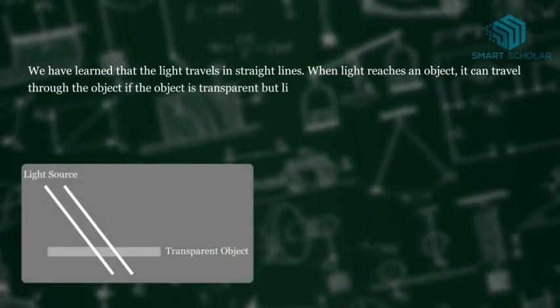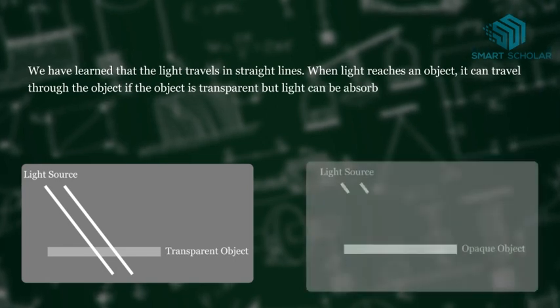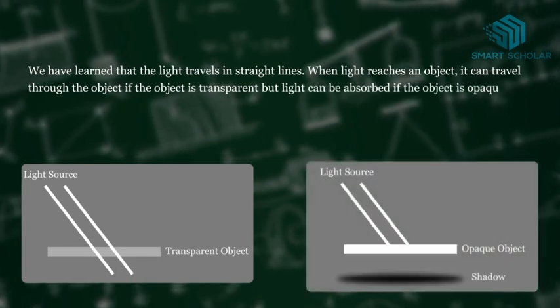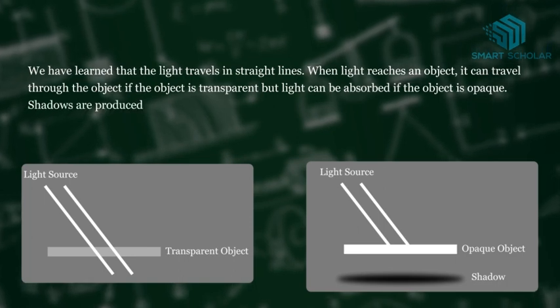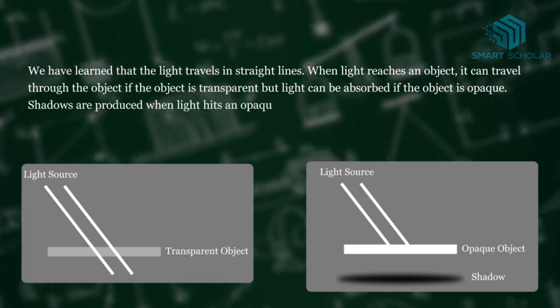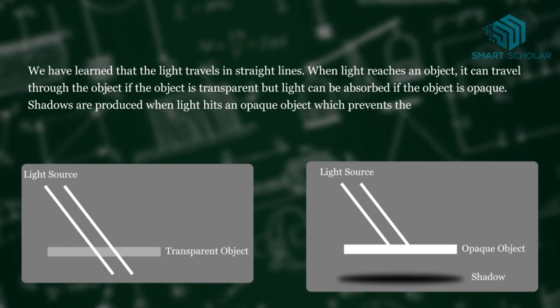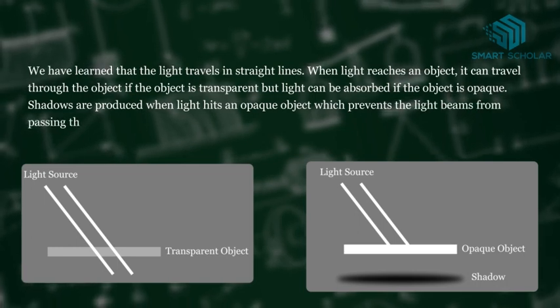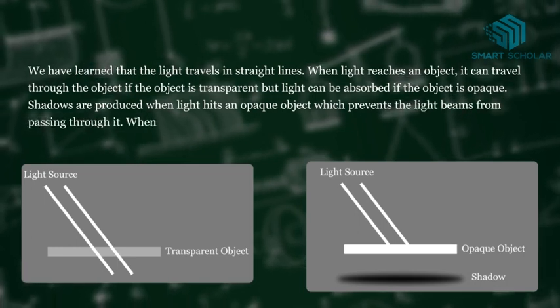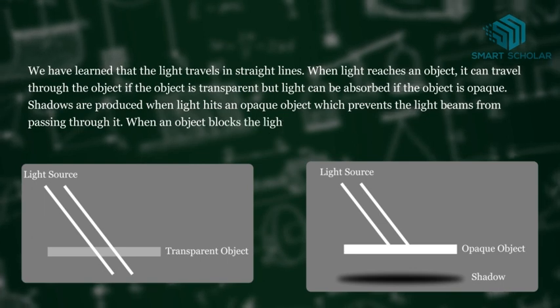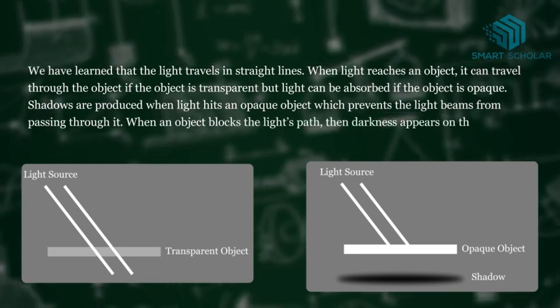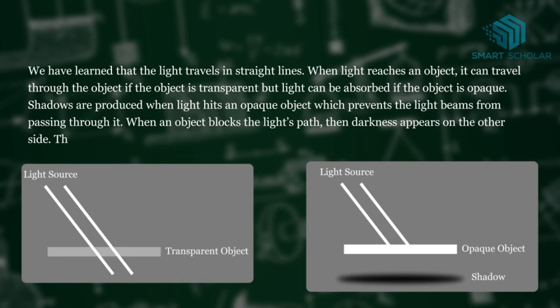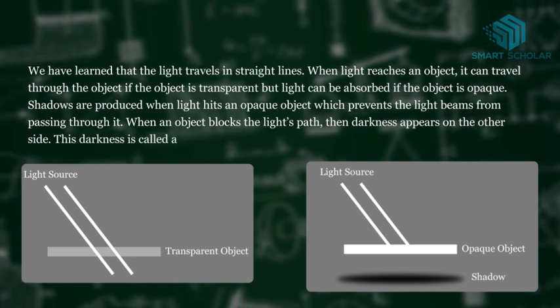Shadows are produced when light hits an opaque object, which prevents the light beams from passing through it. When an object blocks the light's path, then darkness appears on the other side. This darkness is called a shadow.